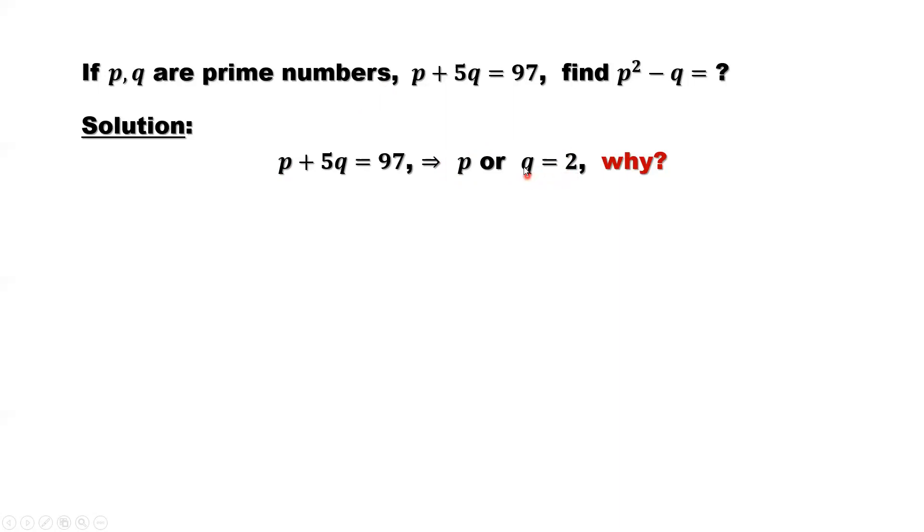We consider different situations. First situation, q equals 2. When q equals 2, replace q by 2 here. That should be 10, move to the right-hand side. We find the p-value. p-value equals 87. 87, we can decompose. 87 equals 3 times 29.